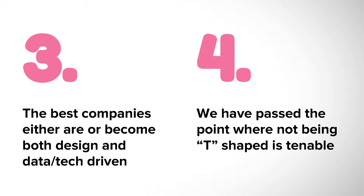The fourth belief is that we've passed the point where not being T-shaped is tenable. In engineering, T-shaped is a buzzword for people who have very deep knowledge of one subject and also a wide, if not as deep, knowledge of other subjects. So if you're a data engineer, you might be very good at distributed systems, but you should probably also have knowledge of back-end and front-end engineering. I would like to argue it's also important for designers to stretch themselves and become more T-shaped and cross-functional so they can work well with data scientists or engineers.